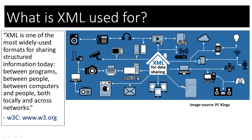What is XML used for? XML is used for data sharing. It is one of the most widely used formats for sharing structured information today — between programs, between people, between computers and people, both locally and across networks. That is according to W3C.org. XML is actually used for sharing data between multiple devices and is an integral part of every web application. For example, every layout in an Android mobile application is created in XML.